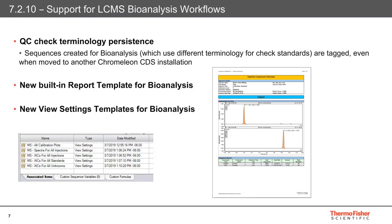We also have new view settings templates designed for handling large datasets. The templates have been added to the contributed content folder of the Chameleon distributable, and can be imported or added to any relevant MS sequence. These view settings include examples for layouts such as a component across all QC samples or unknowns, and MS spectra of a component across all injections. Both the report and view settings templates are designed to get users up and running quicker, saving valuable time. The QC terminology check provides confidence and consistency by highlighting any change with a visual message bar, which displays whether the stored sequence setting is different from the current settings defined in the Chameleon administration console.